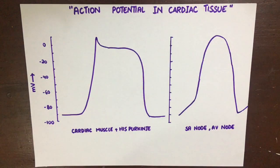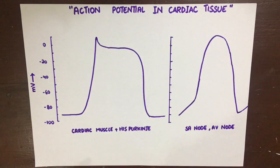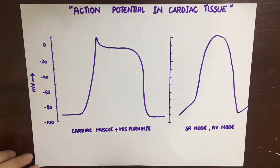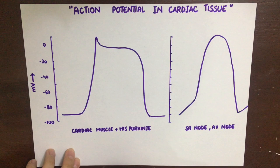Before studying arrhythmias and antiarrhythmic drugs, we first need to see how an action potential is generated within the cardiac cells that have automaticity, for example the SA node, and how it is propagated within the other cardiac cells and muscle fibers causing their contraction. First, we'll see how an action potential propagates within the cardiac muscle cells and Purkinje fibers. These two areas do not have automaticity; they only propagate the action potential sent to them via cells that have automaticity, such as the SA node and AV node.